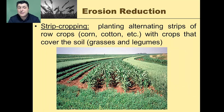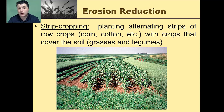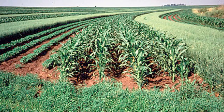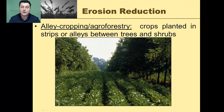Another technique is strip cropping, where we plant alternating strips of row crops like corn and cotton with crops that cover the soil like grasses and legumes. This helps slow the movement of water over the land and maintains topsoil.